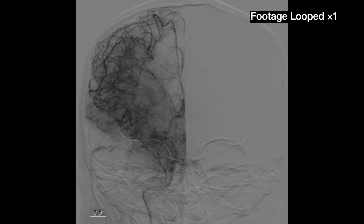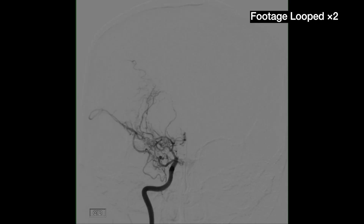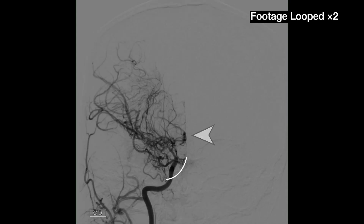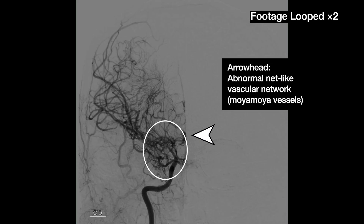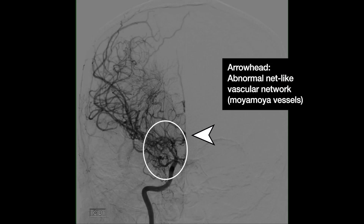The imaging here shows the right hemisphere of the brain. Digital subtraction angiography revealed an abnormal net-like vascular network with a smoke-puff appearance in the vicinity of a stenosis of the terminal portion of the right internal carotid artery, which confirmed the diagnosis of Moyamoya disease.